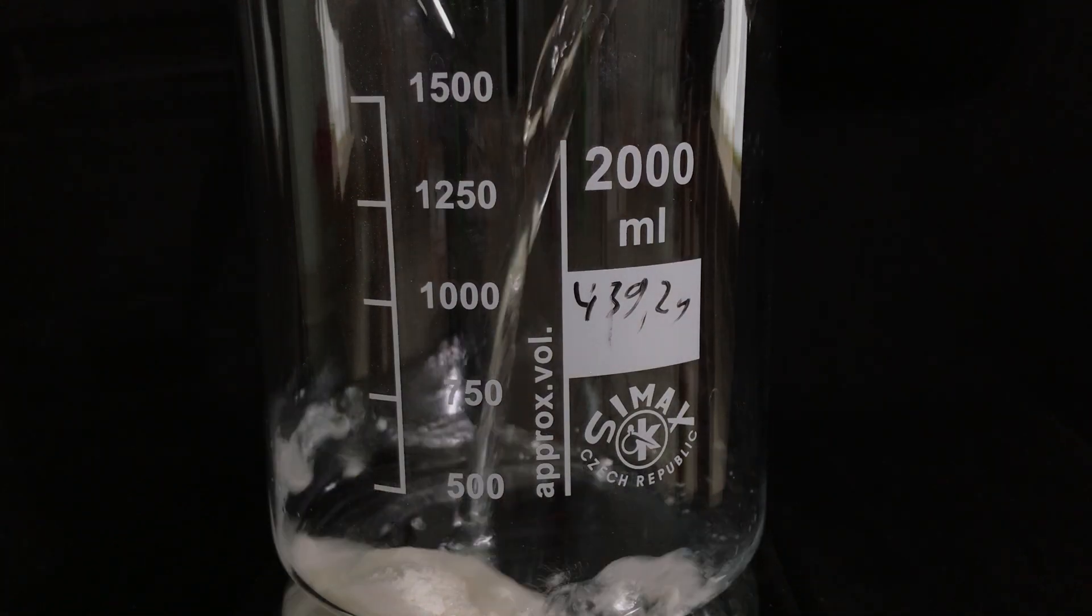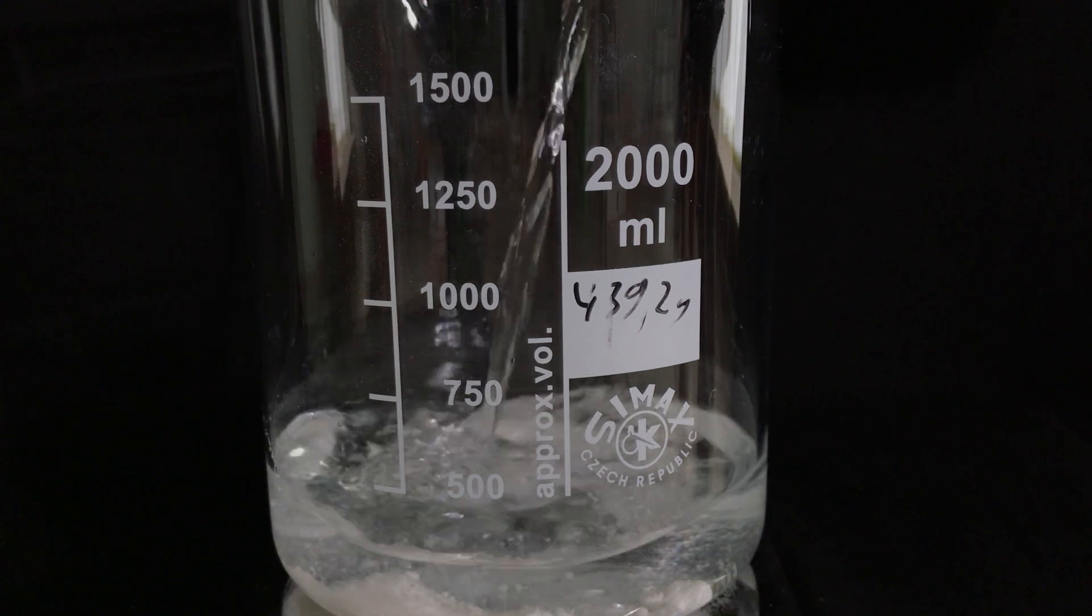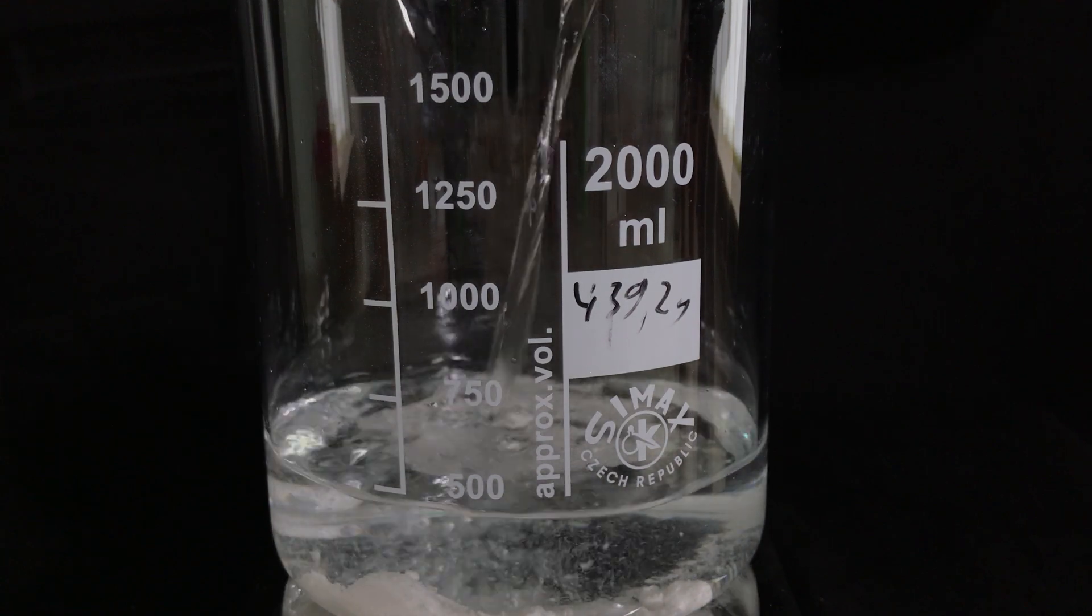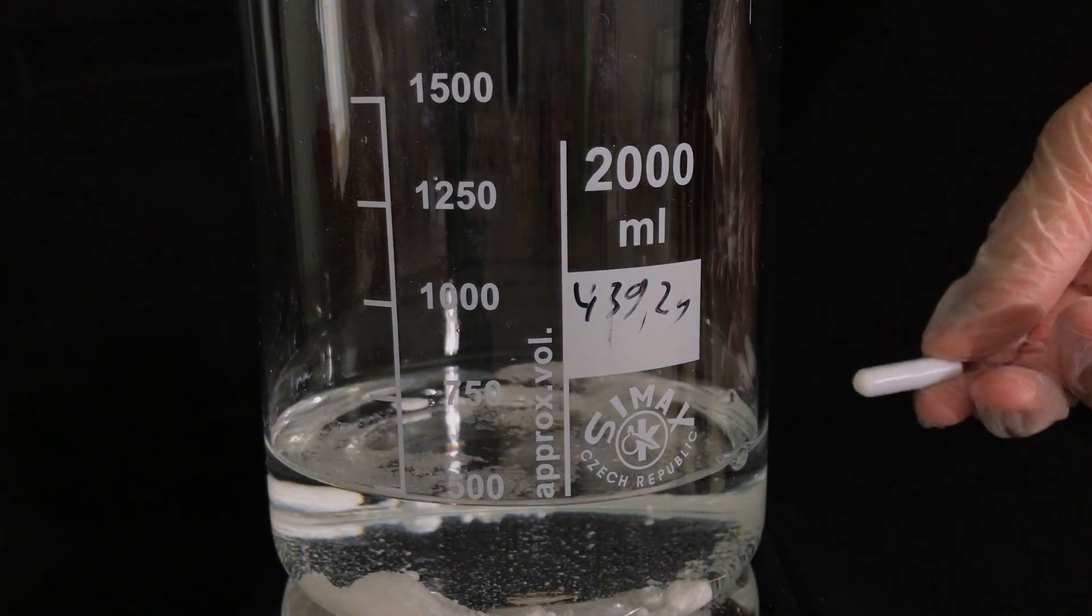Now that the mercuric chloride is in the beaker, we need to dissolve it. Therefore, distilled water was added. The final product would be poorly soluble anyways, therefore you can't overshoot by adding more distilled water. To speed up the dissolving process, we added the stir bar for stirring.